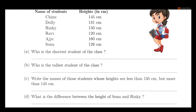The first column is the name of the students. In the school, the students are: Chinoo, Dolly, Rinky, Raveen, Ajoo, and Sono. The height is given in centimeters. For example, Rinky's height is 150 centimeters.